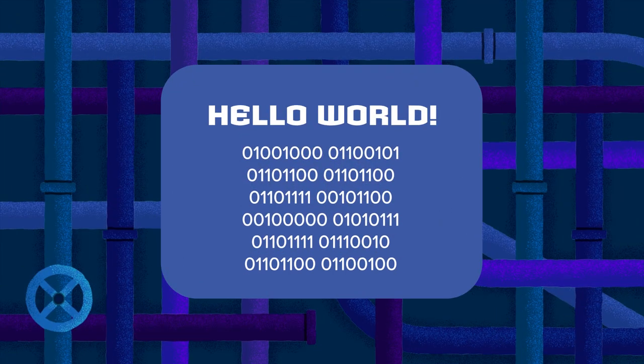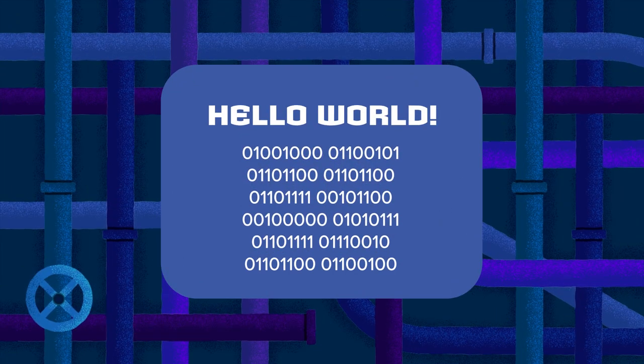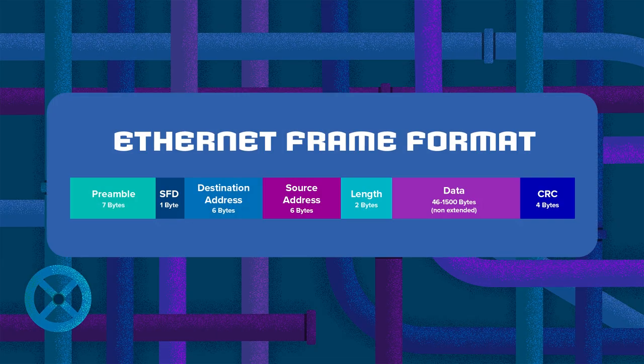A network has to translate the data you want to send into zeros and ones. Frames are what the data packets are wrapped up with, and addressing and control information is added — where it goes, and in what order is this packet?